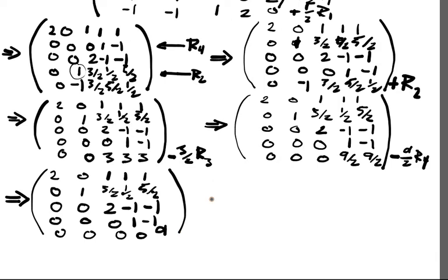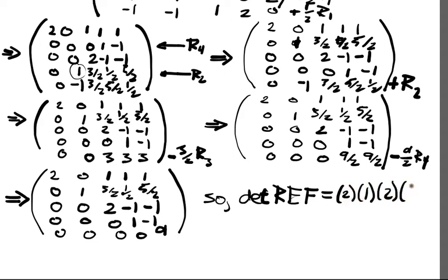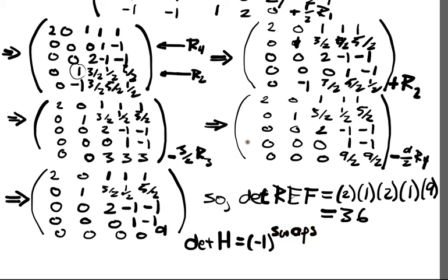So the determinant. Determinant of the row echelon form is going to be, well, it's a multiple, it's the... we multiply all the diagonal entries. That's the determinant of an upper triangular matrix. It's 2 times 1 times 2 times 1 times 9, and that's going to be equal to 36. Now remember that the determinant of H is equal to negative 1 to the number of swaps, which was 2. Remember that we only did 2 swaps, times the determinant of the row echelon form. So since we only did 2 swaps, this is equal to negative 1 squared times 36 we've calculated. And so this is equal to just positive 36.